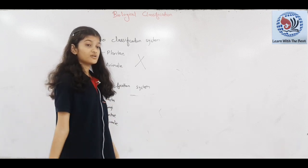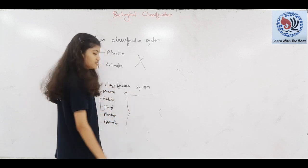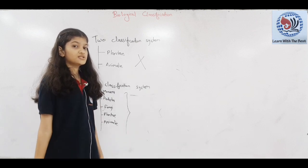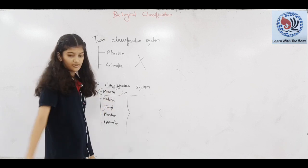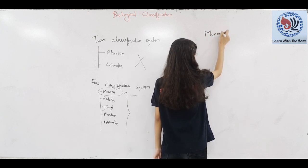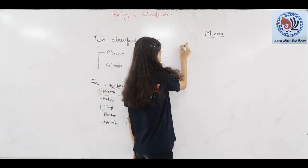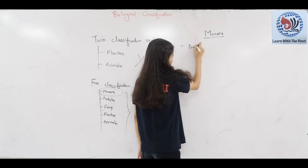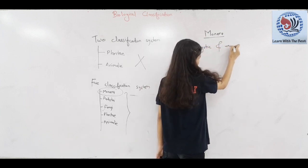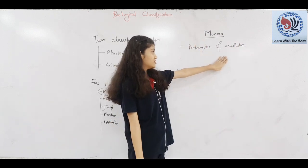This is our five classification system given by R.H. Whittaker. This classification system has been explained on a classification basis. In the Monera Kingdom, there are prokaryotic and unicellular organisms.